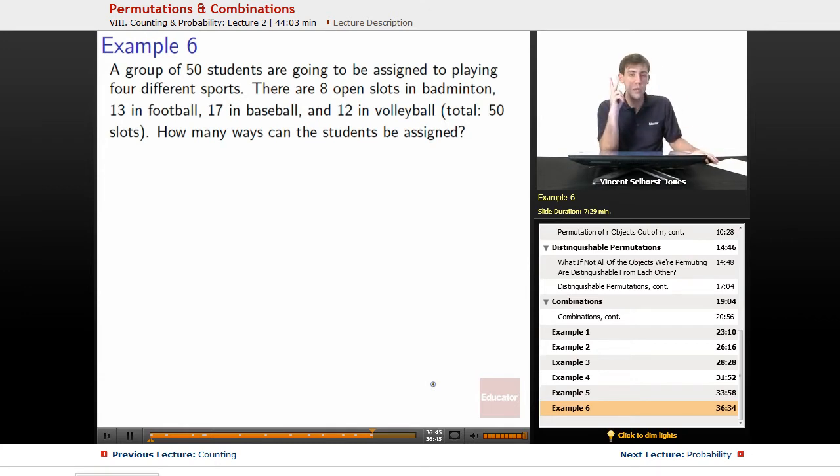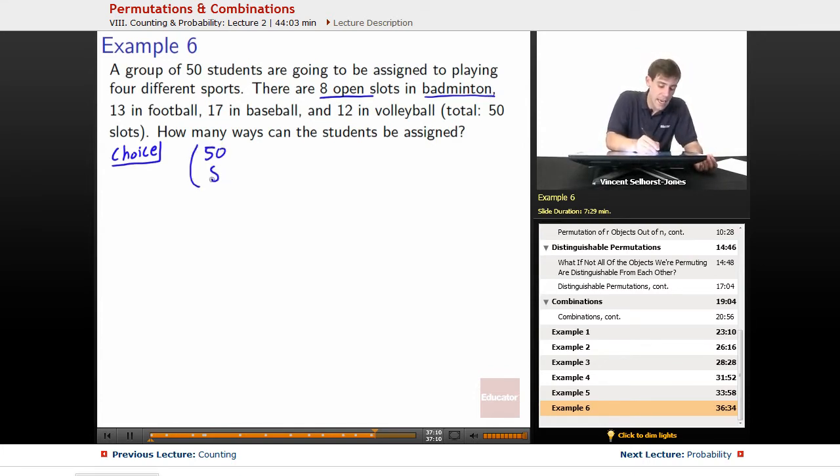So we're going to look at this in two different ways. The first way we're going to look at it is through the idea of choice. So we start off and let's work on badminton first. We have 8 open slots for badminton, so we're looking at how many ways are there to choose 8 players. 50 students we're choosing from, so 50 choose 8 is all the ways we can choose our badminton group.